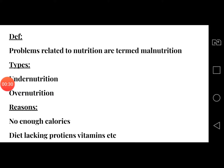There are two types of malnutrition: under nutrition and over nutrition. Under nutrition means that we are taking nutrients less than what is required by our body, and over nutrition means that we are taking more nutrients than are required by our body.